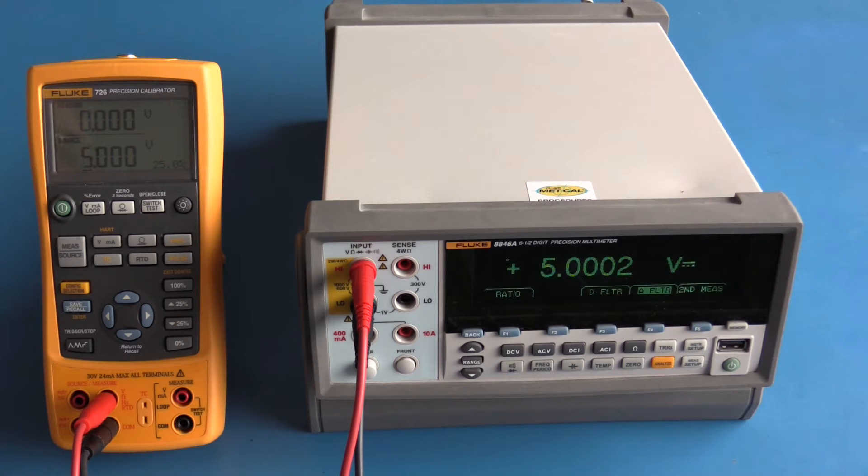I now have the Fluke 726 set up to source 10 volts, and this really shows you the real benefit of a meter like this Fluke 8846a. Even though I'm not using the full resolution of the Fluke 8846a, I still have 400 microvolt resolution with 10 volts applied. Using the full resolution of the Fluke 8846a with a 10 volt signal applied I have 10 microvolt resolution.